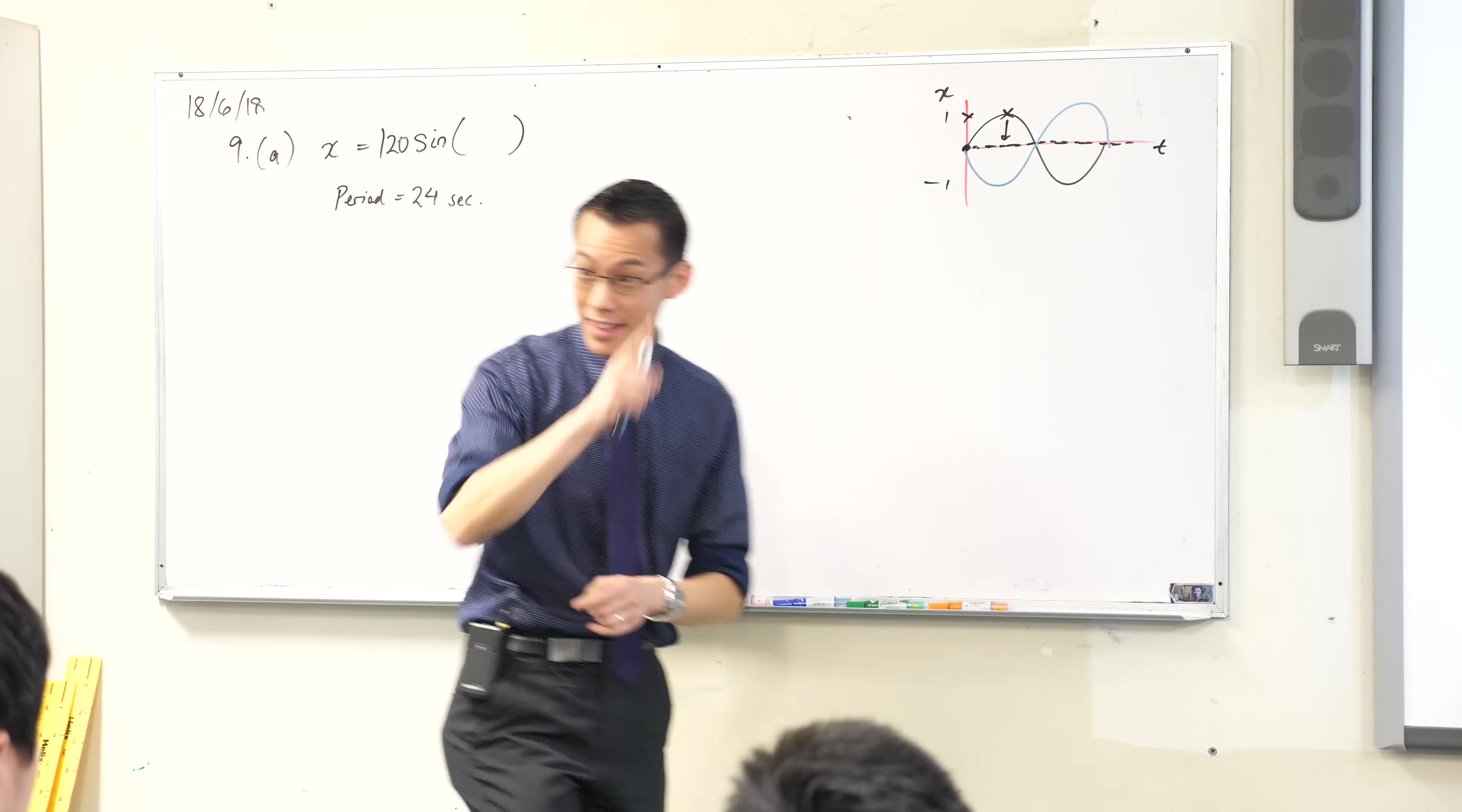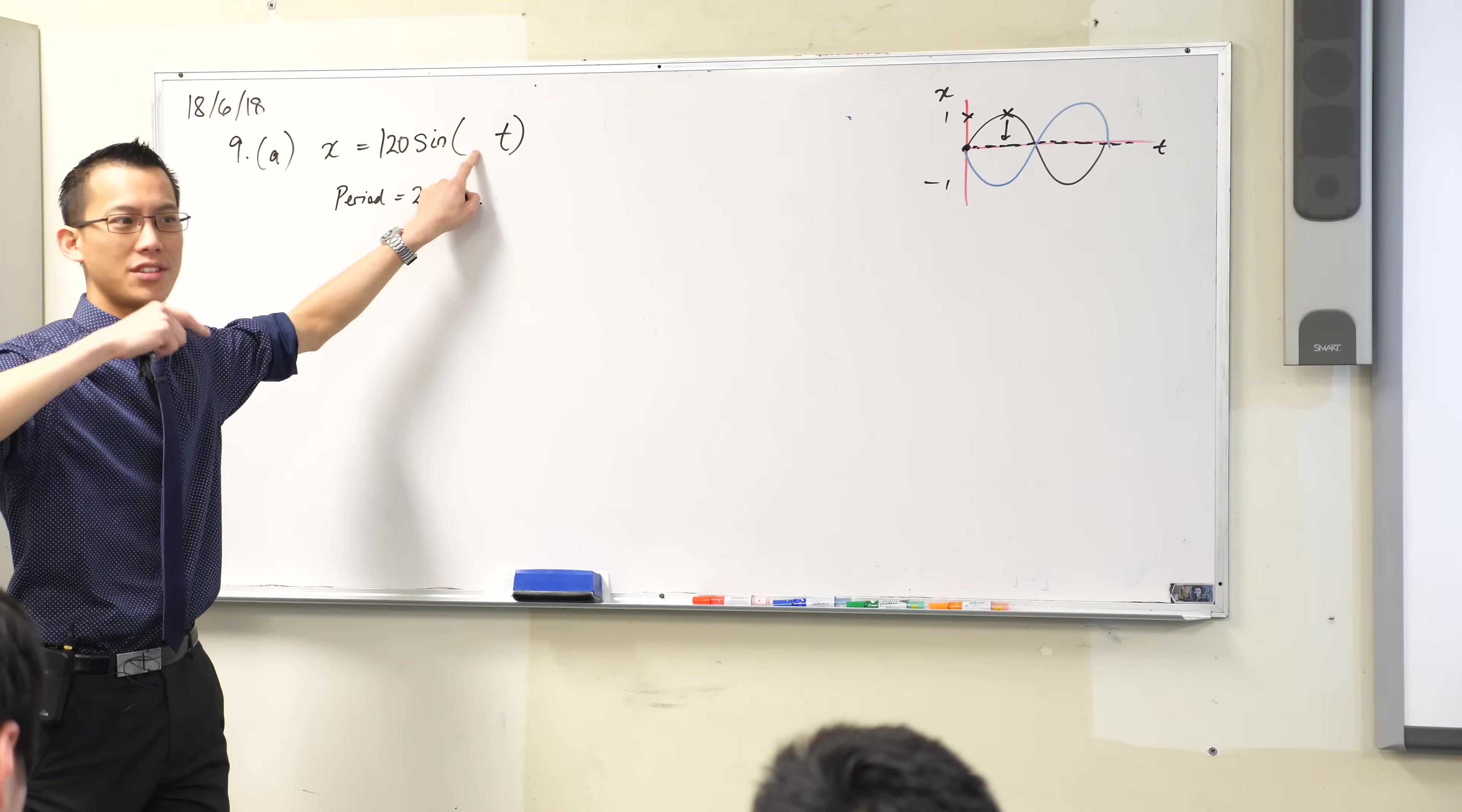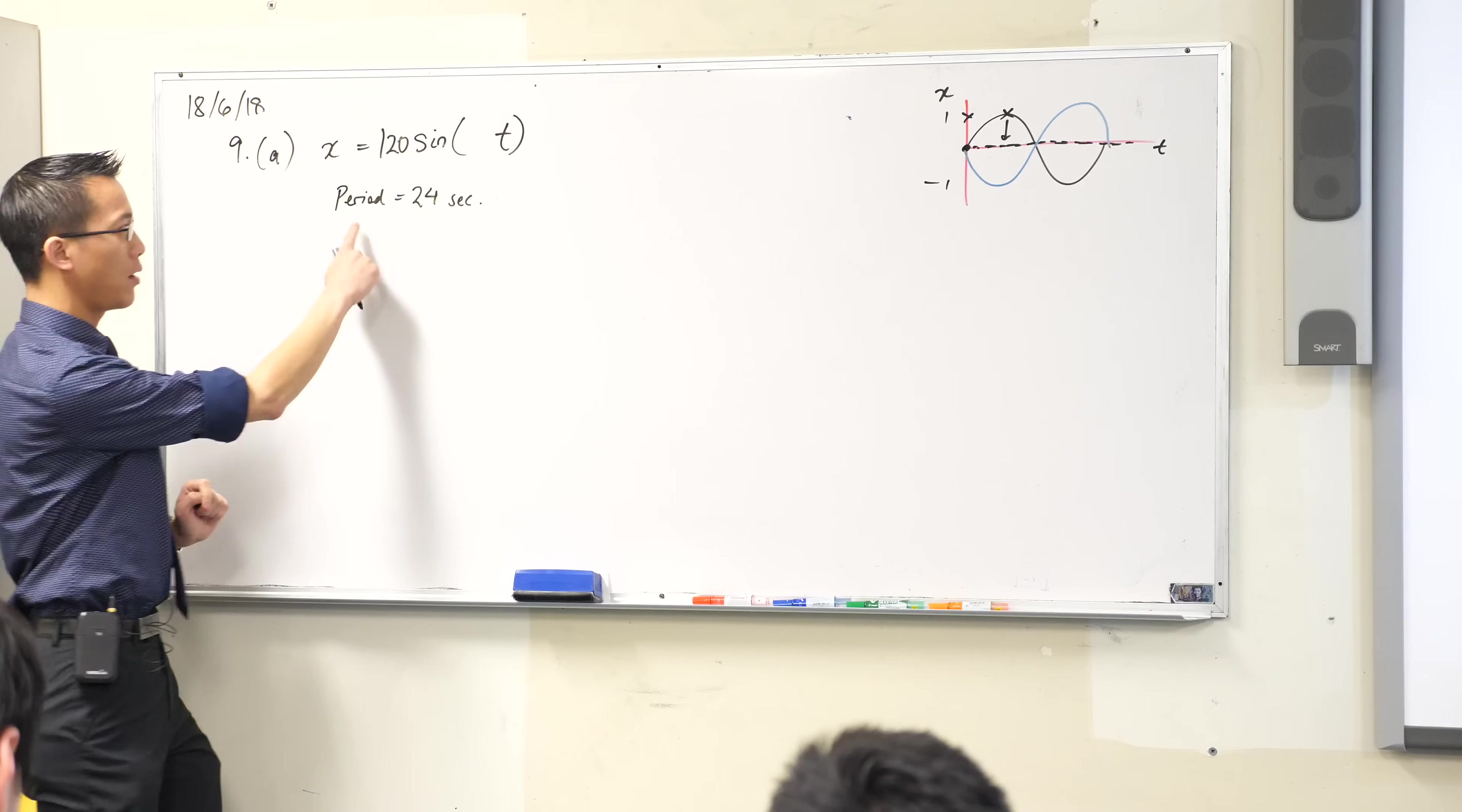You've already got this one. Where else could numbers go? Where else do I have blanks in here? It's going to be in the brackets, right, that big gaping hole that's there. We know this is a function of time but there's going to be some coefficient here which changes how quickly it's oscillating back and forth.